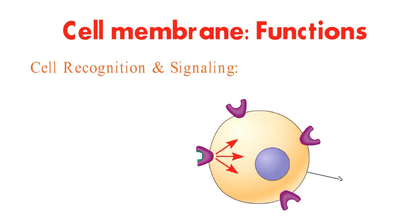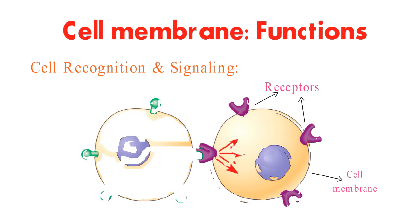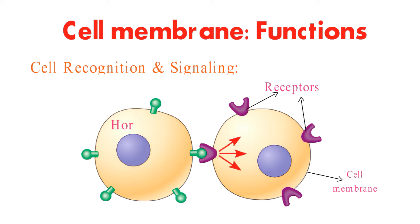The cell membrane is like a communication hub. Receptor proteins on the surface recognize specific molecules, like hormones, and trigger cellular responses. This is how cells communicate with each other and their environment, ensuring proper coordination.